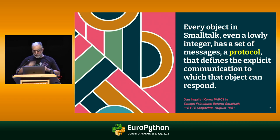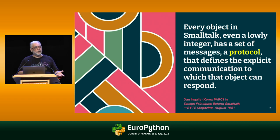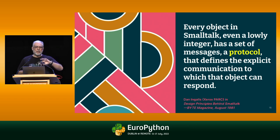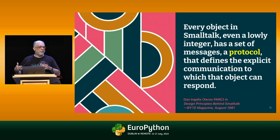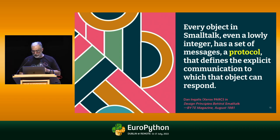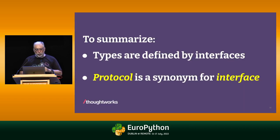In the Smalltalk community, they use the term 'protocol.' This quote is from one of the designers of Smalltalk: 'Every object in Smalltalk, even a lowly integer, has a set of messages — a protocol — that defines the explicit communication to which that object can respond.' In Smalltalk there was no explicit way to declare a protocol, but some browsers used to code in Smalltalk did present clusters of methods as a protocol, and a class could implement several protocols. It was used more as metadata for the programmer than something that was checked.